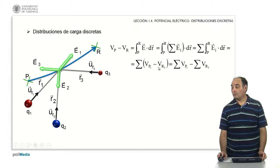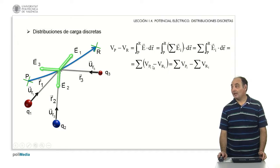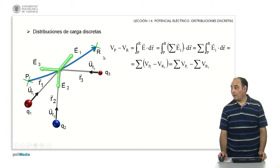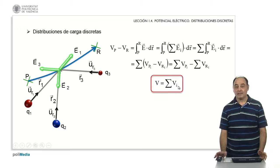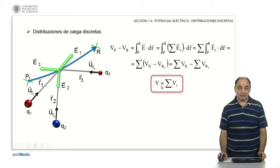Instead of doing this sum of differences, I can do the sum of minuends, the sum of subtrahends, and subtract them. Comparing terms, this subtraction equals that subtraction, and you can easily deduce that the potential is the sum of partial potentials, which is what we are aiming at here.